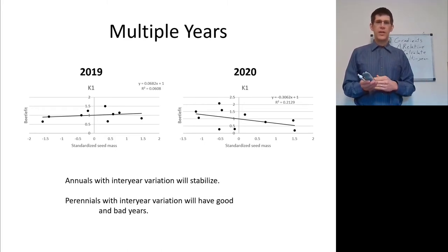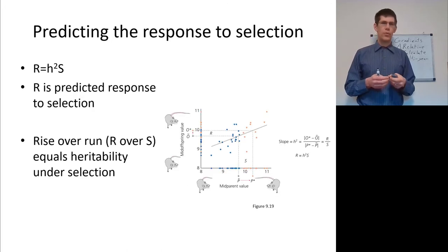For perennials, however, with that inter-year variation, it means they have good and bad years. And if over a long period of time a plant has more bad years than good years, then that plant is going to be selected against in the population. So for a perennial plant or an animal that is seasonally iterative and produces offspring every year, you're going to have good years and bad years resulting in differential fitness each year.